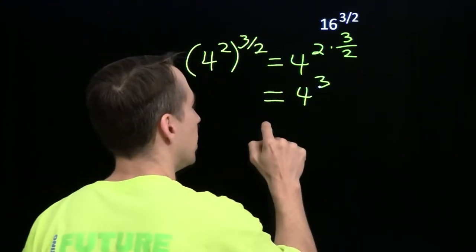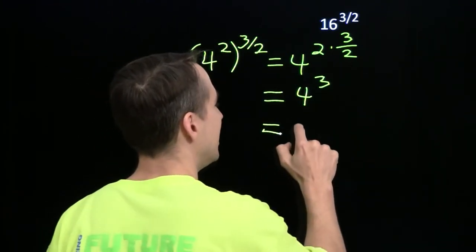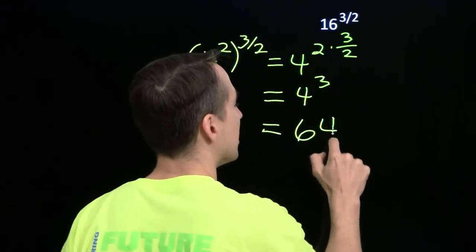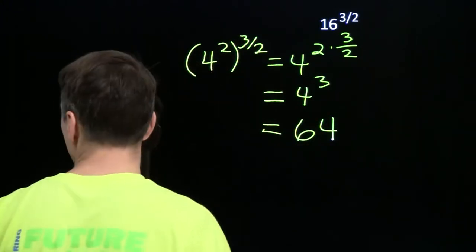4 cubed is 4 times 4 times 4. 4 times 4 is 16. 16 times 4 is 64. And we're on to the next problem.